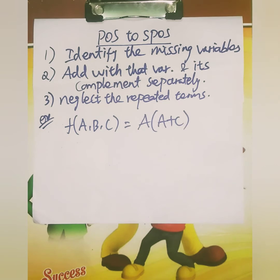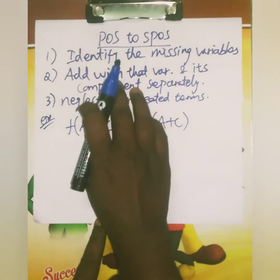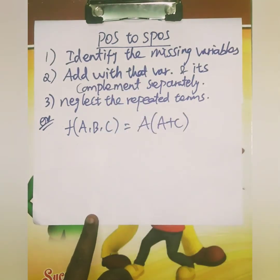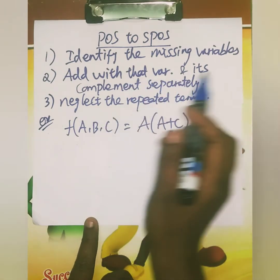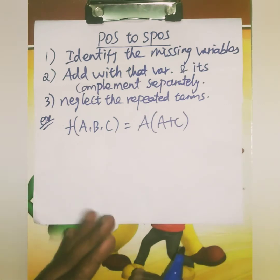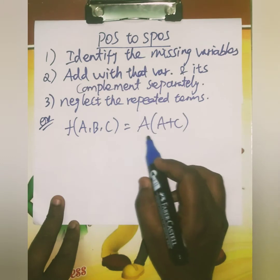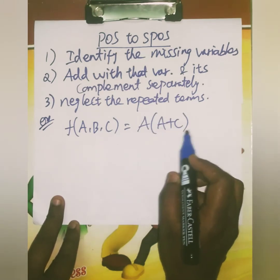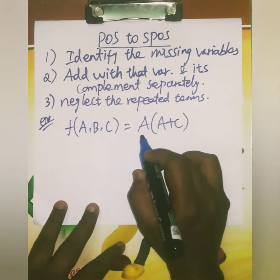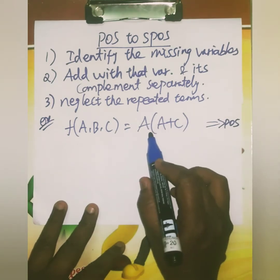This exercise is for converting POS to SPOS form — product of sums to standard product of sums. First, identify the missing variables, just like in the previous exercise. Then add that variable and its complement separately. Third condition: neglect the repeated terms. The given expression is F of A, B, C equals A times A plus C.